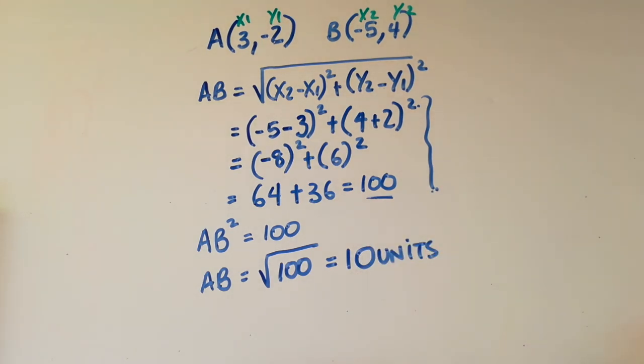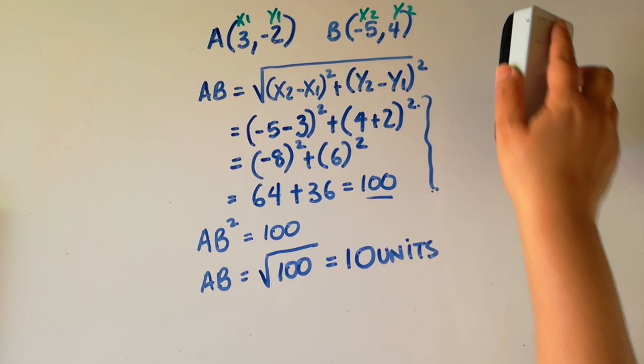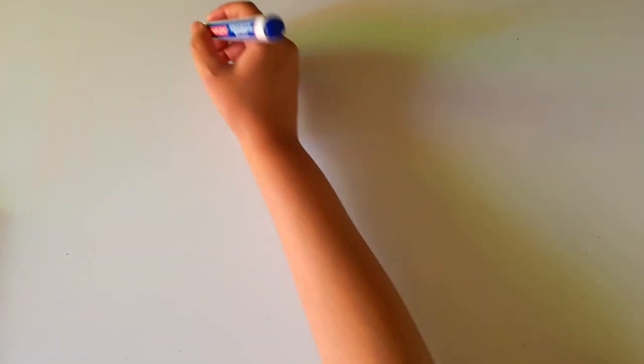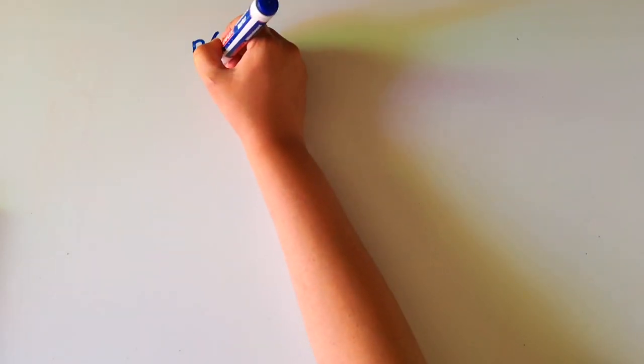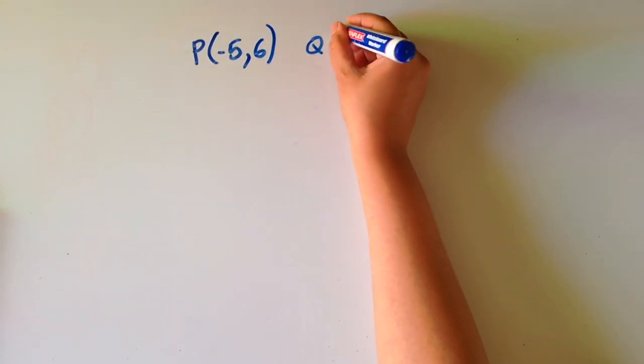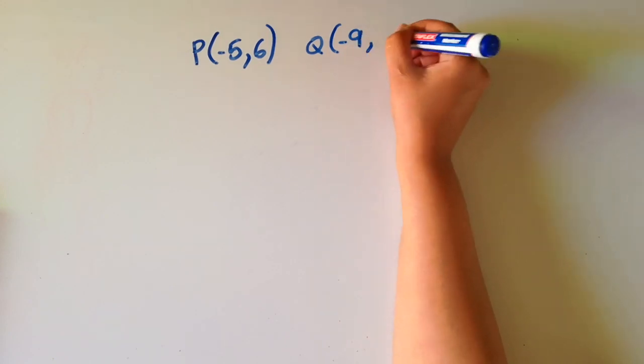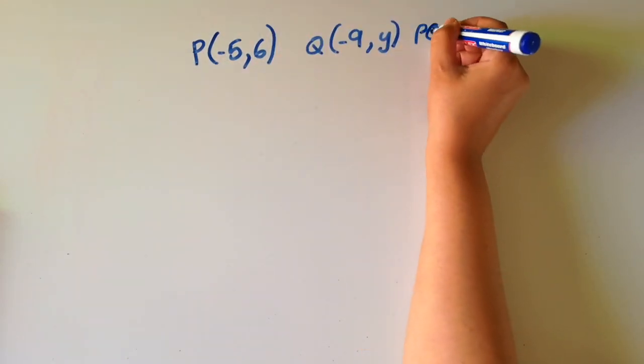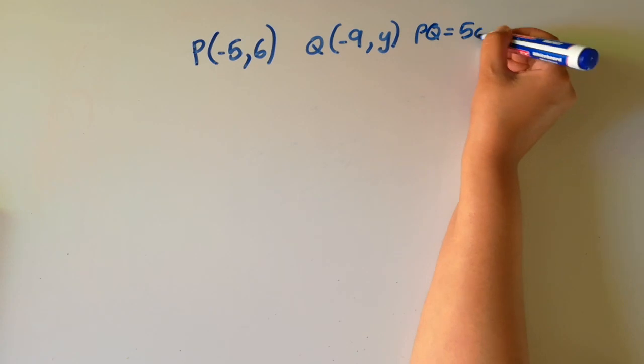Let's try something a little bit harder. Let's say I have two points, P and Q. Let's say I have P, which has an x value of minus 5 and a y value of 6. I have Q, which has an x value of minus 9 and a y value of y. So we don't get the y value there, and I've got the distance between these points, PQ, is equal to 5 centimeters.